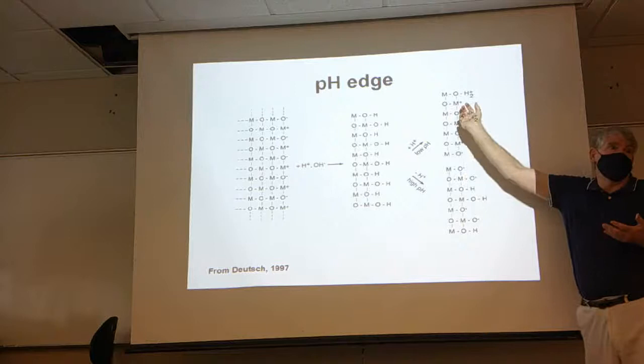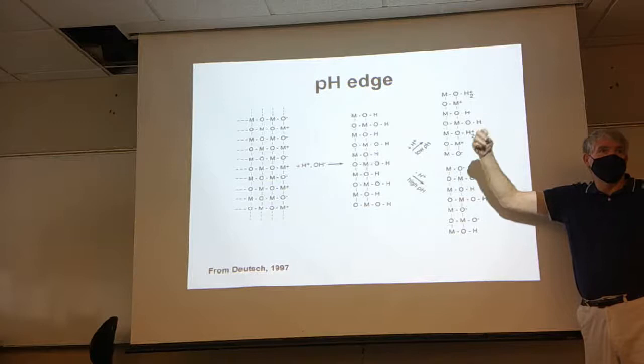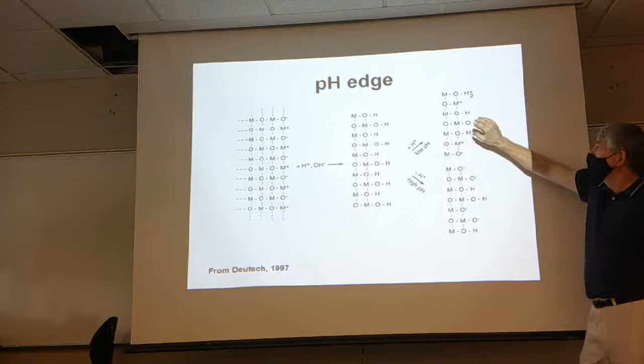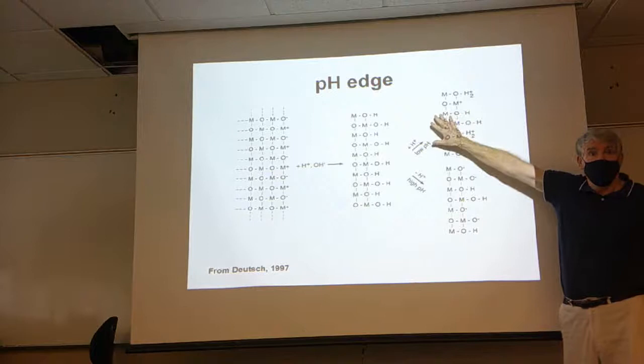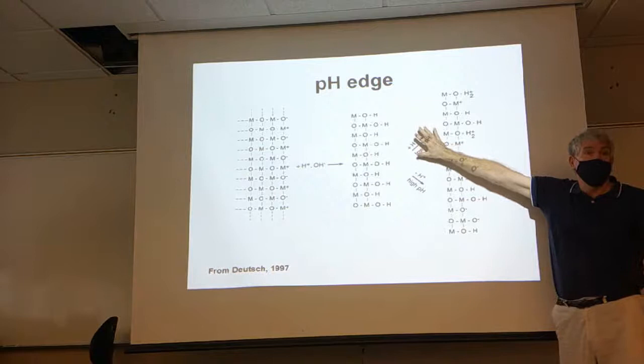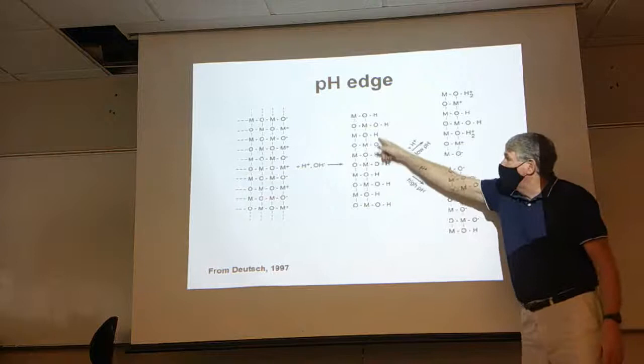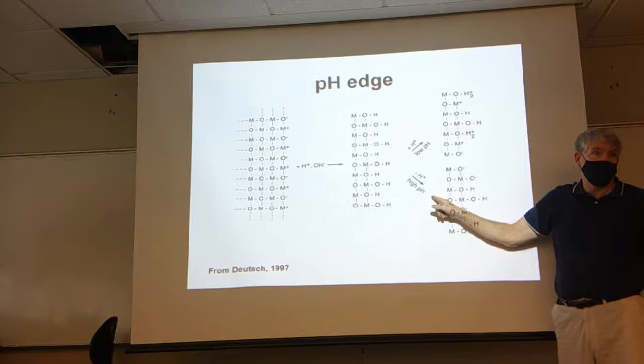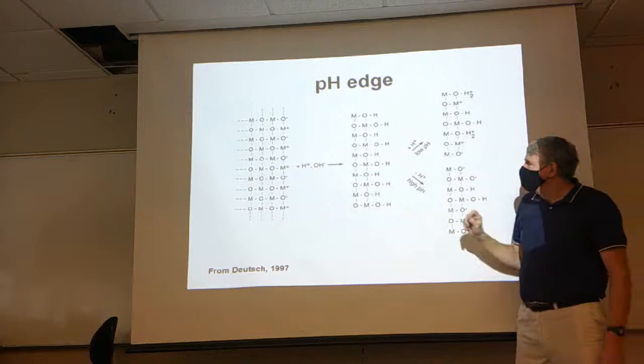In that process we can also dislodge metal ions — positively charged ions like lead, cadmium, copper, zinc — and stick them into the water as well. So under acidic conditions we're going to stick anions on there; we're not going to stick cations very well. Let's go the opposite way — if our mineral grain is put in a more basic solution with higher pH.